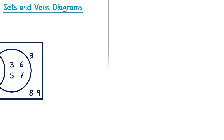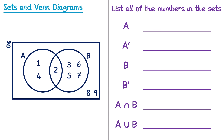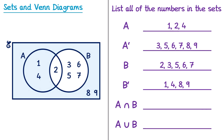Here's a question for you to try — list all numbers in each set. Set A contains 1, 2, and 4. NOT A contains 3, 5, 6, 7, 8, and 9. Set B contains 2, 3, 5, 6, and 7. NOT B contains 1, 4, 8, and 9. The intersection A ∩ B contains just the number 2. The union A ∪ B contains 1, 2, 3, 4, 5, 6, and 7.